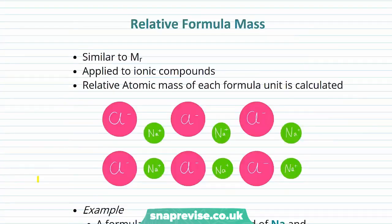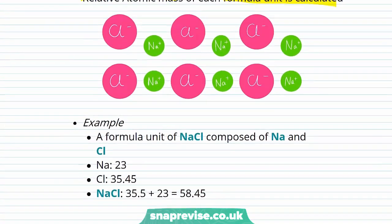The final concept is relative formula mass, which is similar to molecular mass but applied to ionic compounds. In ionic compounds we have repetitive formula units. To calculate relative formula mass, the relative atomic mass of each atom in one formula unit is calculated. For example, sodium chloride is composed of sodium and chlorine, where sodium has a relative atomic mass of 23 and chlorine 35.45. Adding those together gives a relative formula mass of 58.45.